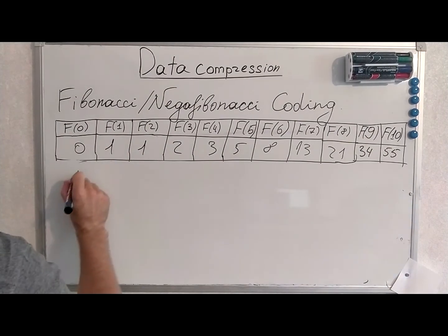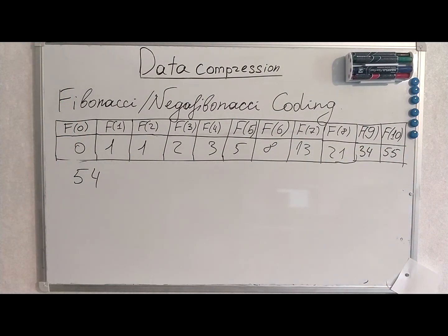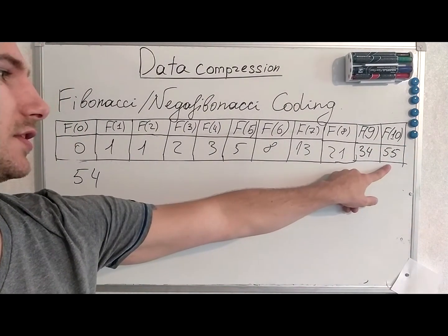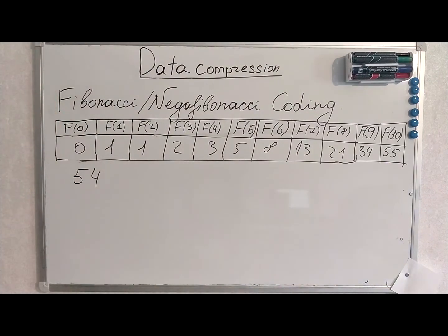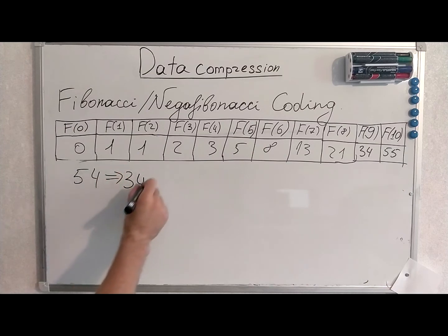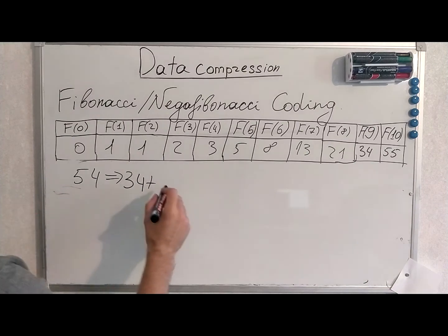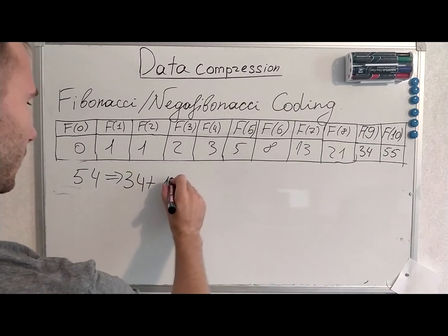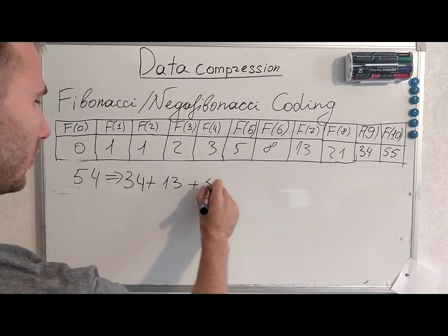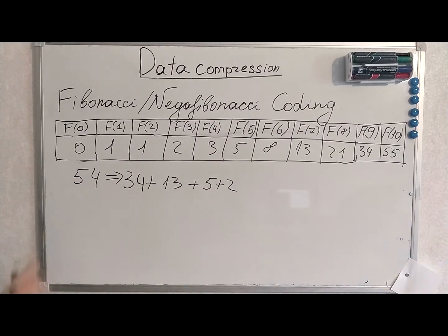The first example will be the number 54. I have continued our sequence up to 55, and the biggest Fibonacci number we need is 34. Now looking for the Zeckendorf representation: 34 plus 13 plus 5 plus 2 equals 54. Let's verify: 2 plus 5 is 7, 7 plus 13 is 20, 20 plus 34 is 54. Correct.